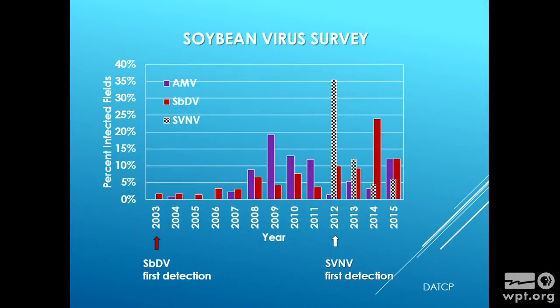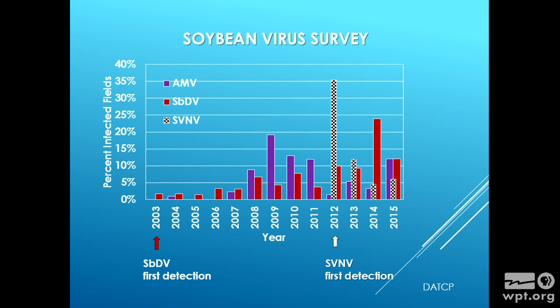Let's switch to soybean viruses. We've been doing a survey on soybeans during the summer in combination with our soybean aphid survey since 2003. In 2003 we found soybean dwarf virus, and I've been tracking that for a number of years — you can see an increase in detections over the years in the red bars. Soybean vein necrosis virus made a big splash in 2012 as a new discovery. In 2013 we still found a lot of it, and now it's slowed down. We also look for alfalfa mosaic virus, something that is seed and aphid transmitted, and there was a little uptick last year on that one too.